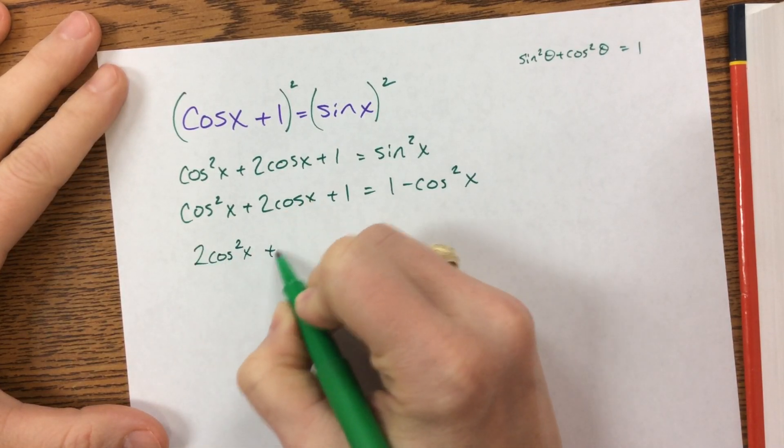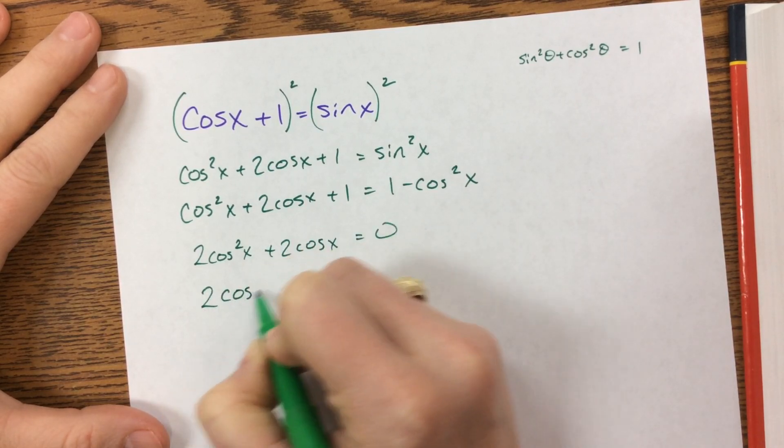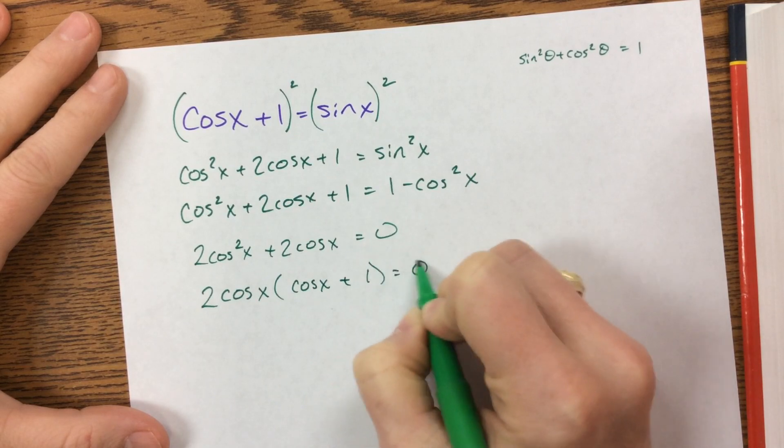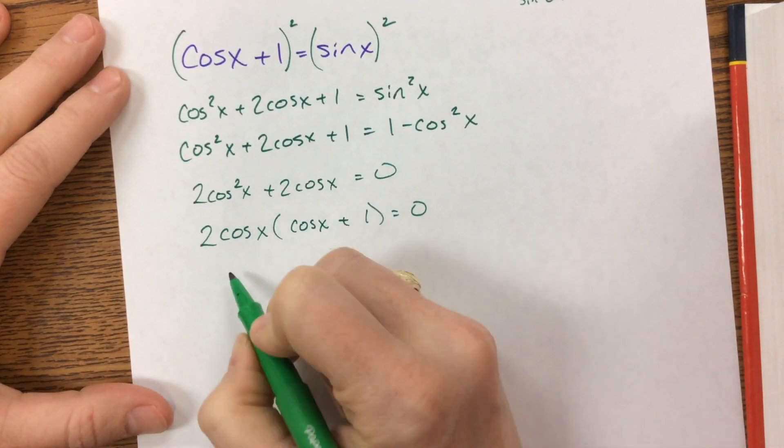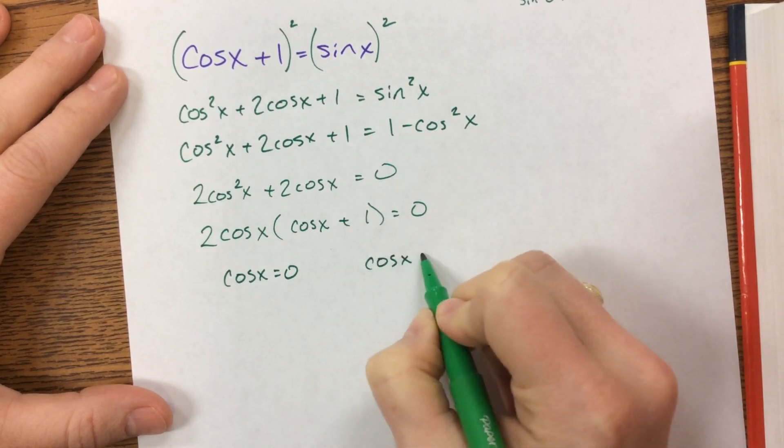Notice the 1's cancel out, and when I move the cosine squared to the other side, I get 2 cosine squared plus 2 cosine is equal to 0. I can factor out. Then I know that cosine of x is either equal to 0 or it's equal to negative 1.